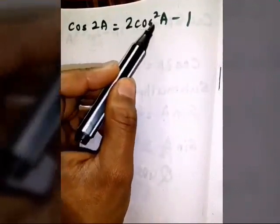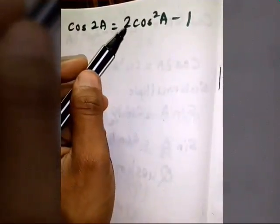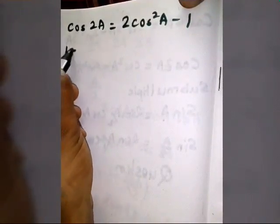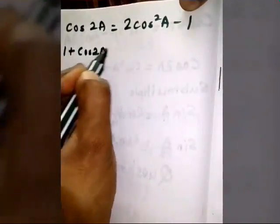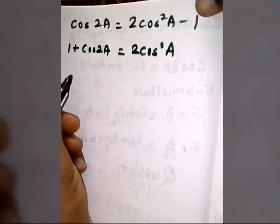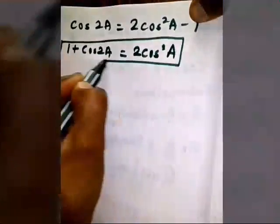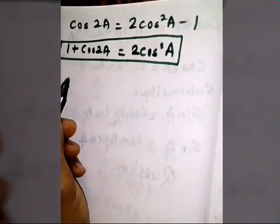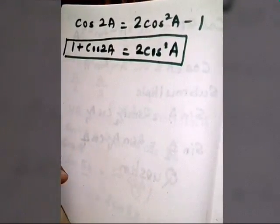There are certain forms of multiple angles which are used more frequently. Let's talk about those. From the formula cos 2A = 2cos²A − 1, if we rearrange and bring 1 to the other side, we get: 1 + cos 2A = 2cos²A. This form is quite important and you will use it many times in problems, so please keep it in mind.